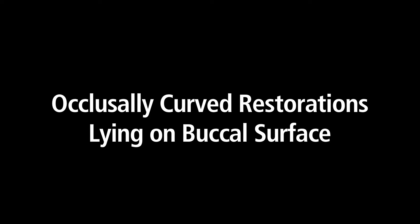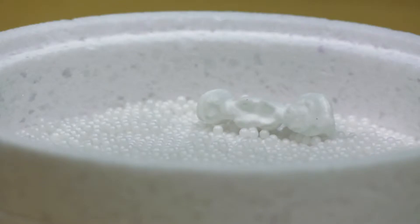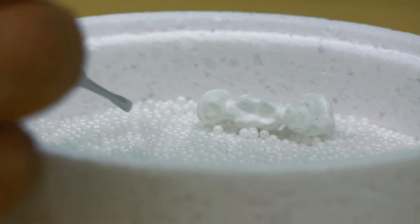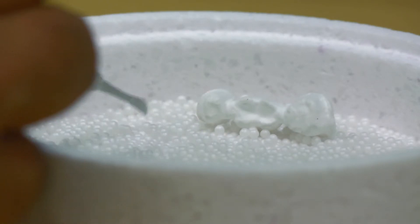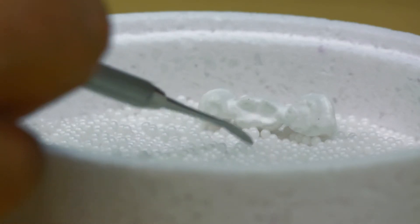Position crown and bridge restorations on the occlusal side of the restoration. Very occlusally curved bridges, or on the Spee's curve, are always to be placed on the buccal or labial side of the restoration so that the center bend of the restoration is lying on the sintering beads.